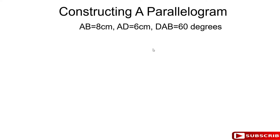How to construct a parallelogram? To construct a parallelogram is quite simple. We're going to construct a parallelogram such that AB is 8 cm, BC is 6 cm, and angle DAB is 60 degrees. So we know how that should look. Let's do that.